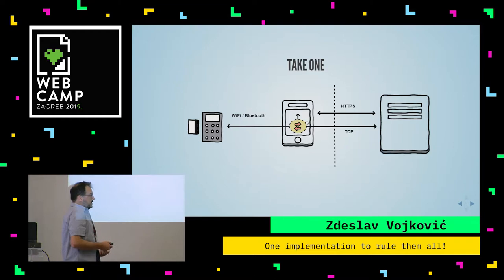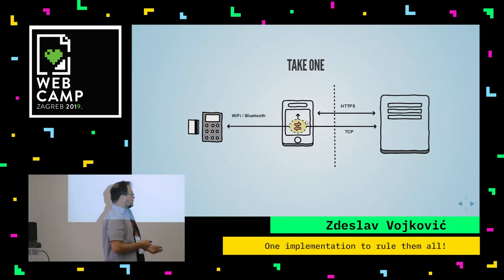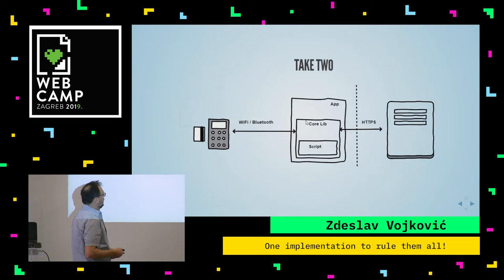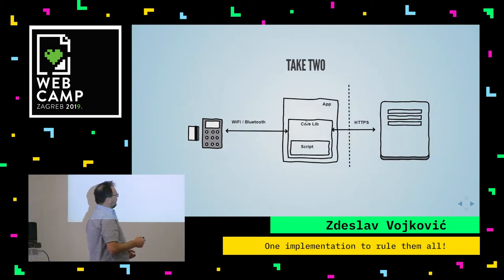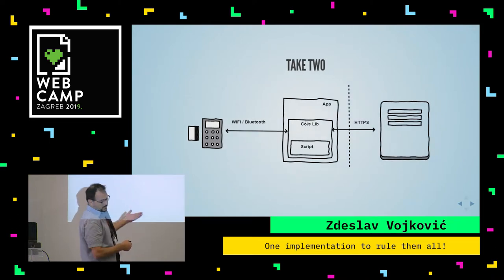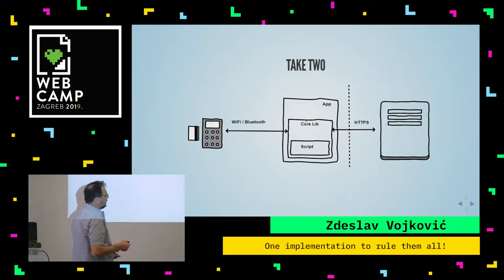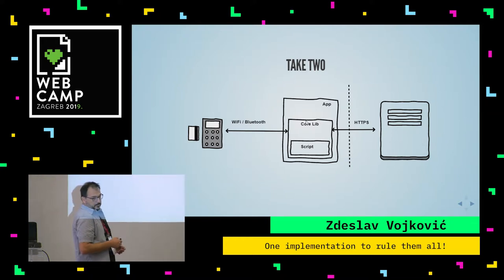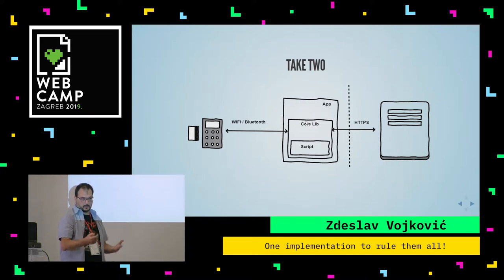As we started branching the applications into other platforms like iOS and Windows, we had to re-implement this bridging logic, notification logic, and everything for each of the platforms. This resulted in subtle and not-so-subtle bugs and differences between platforms. All these issues made us consider a different architecture where we would have a native platform-specific application for iOS or Android.